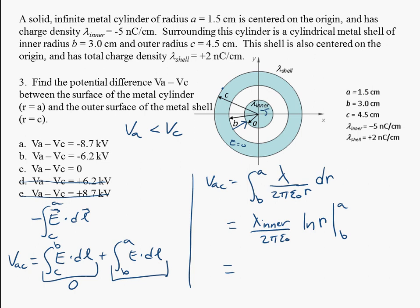So let me just put some numbers in here so we don't confuse lambda inner. So we have 5 times 10 to the minus 9th. This is coulombs per centimeter, so we'll have to convert that. 2 pi 8.85 times 10 to the minus 12th here.